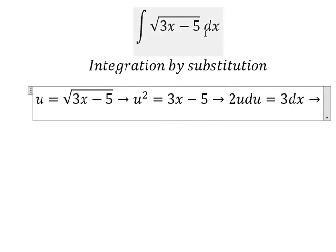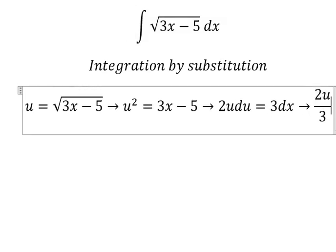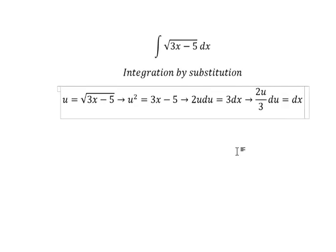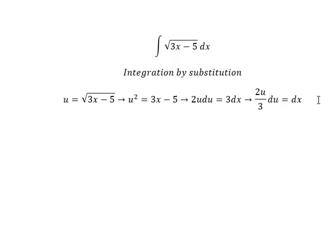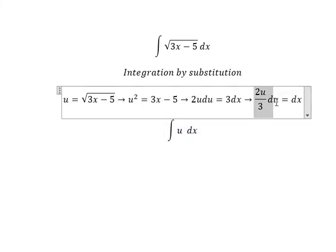Because we don't have number 3 in here, we need to divide both sides by number 3. So the square root we change by u, the dx we change by this one.